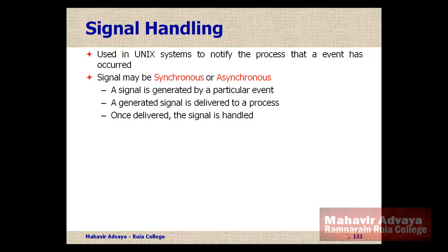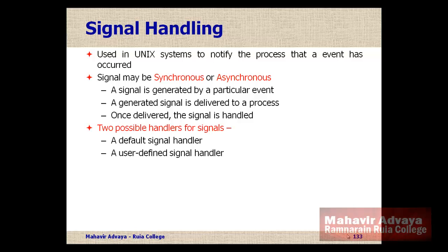A signal is generated by a particular event. The generated signal is delivered to the process, and once delivered, it must be handled by that process. There are two possible handlers: the default signal handler, which handles all signals run by the kernel, and a user-defined signal handler function, which can override the default action.